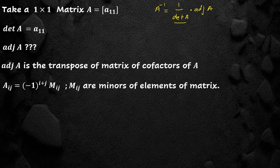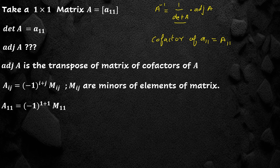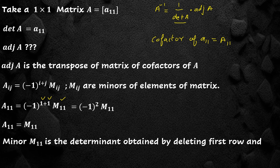Therefore, the cofactor of element A11, denoted by capital A11, is given as A11 equal to minus 1 raised to power 1 plus 1 into M11, which gives A11 equal to M11. But we know that the minor M11 is the determinant obtained by deleting the first row and first column.